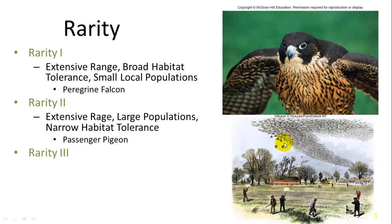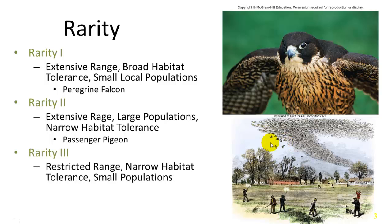The third rarity category is the most vulnerable: restricted range, narrow habitat tolerance, and small local populations — the trifecta of extinction risk. The California condor fits this description perfectly, with very small populations restricted to a narrow and limited habitat range. The California condor is an endangered species. That concludes the discussion on populations.